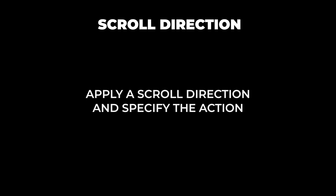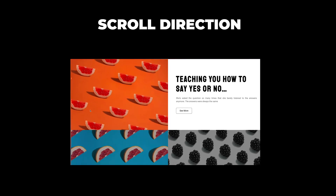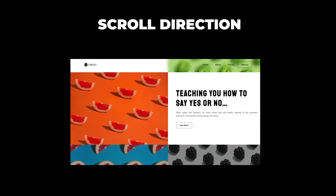Having a fixed header can be great, but it takes up screen real estate, which is important to remain conservative with to ensure a positive user experience. This is where the scroll direction property comes into play. The scroll direction property allows you to apply a scroll direction and specify the action — slide up or reset position — a tolerance, an offset, and a transition duration.